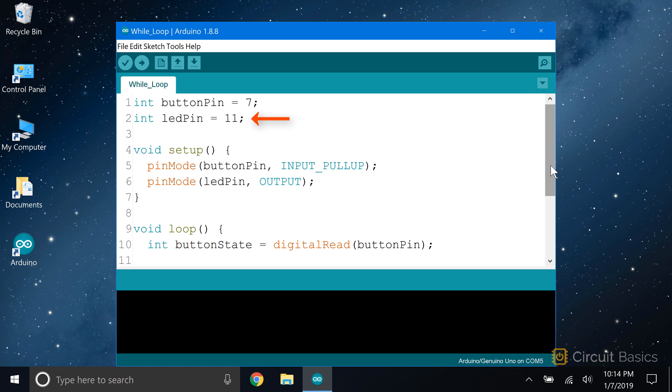In the sketch, I'm declaring variables for the pin connected to the LED and the pin connected to the push button. Then I set the button pin as an input with the internal pull-up resistor, and set the LED pin as an output.